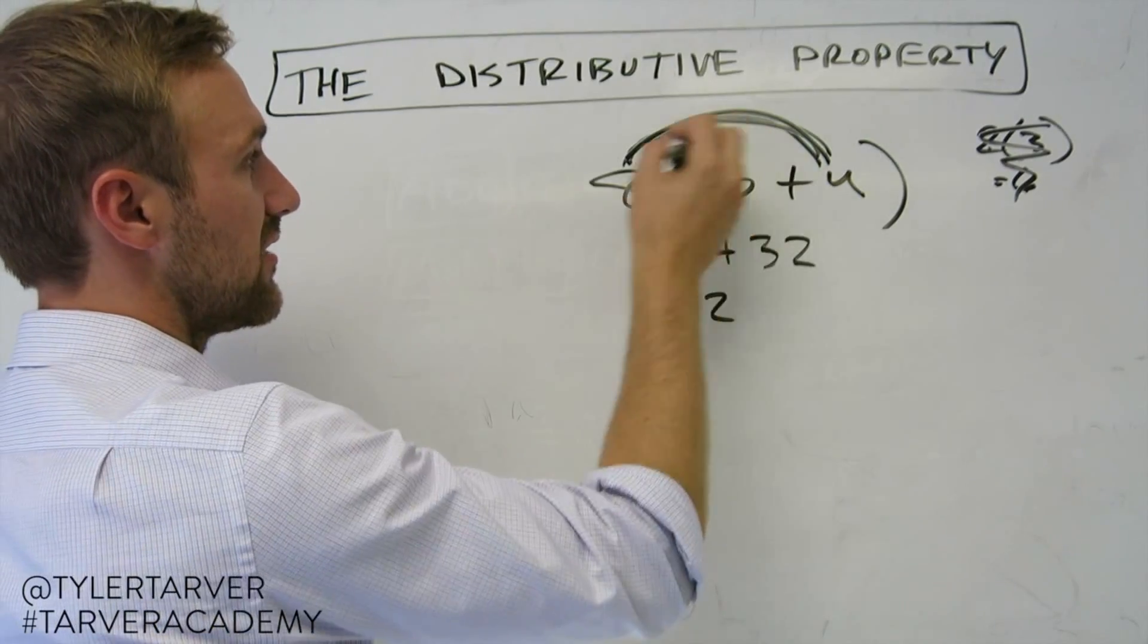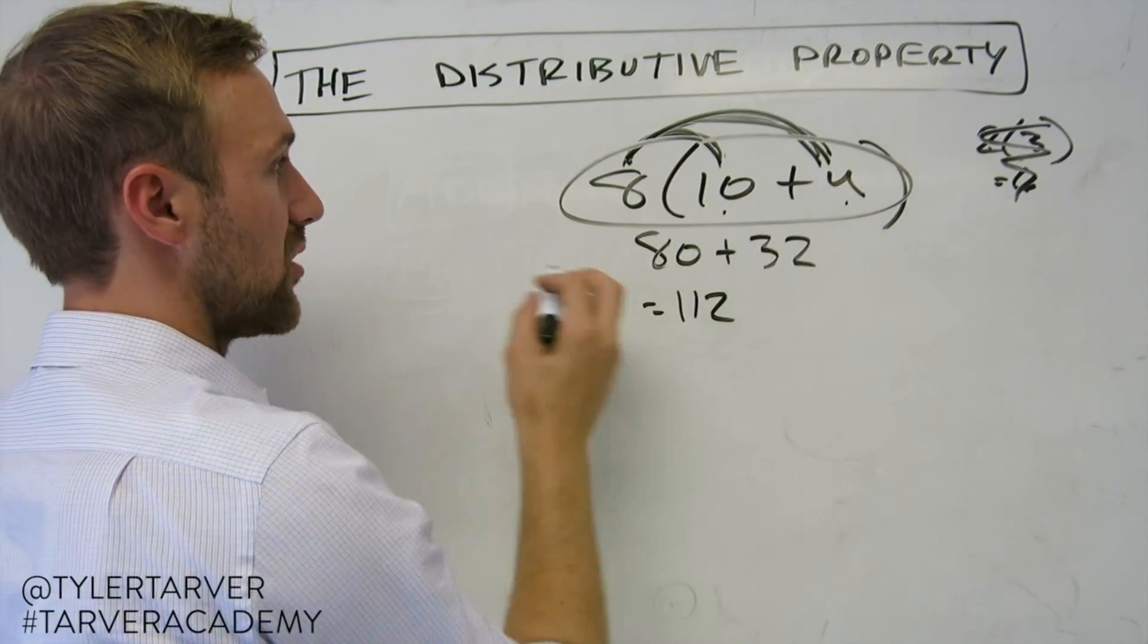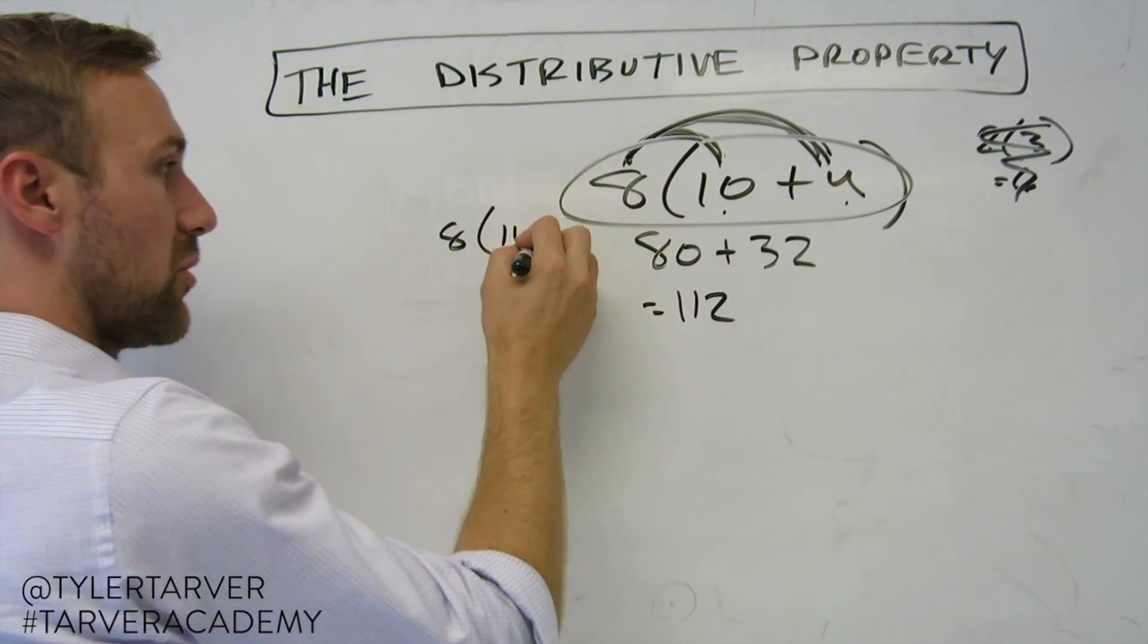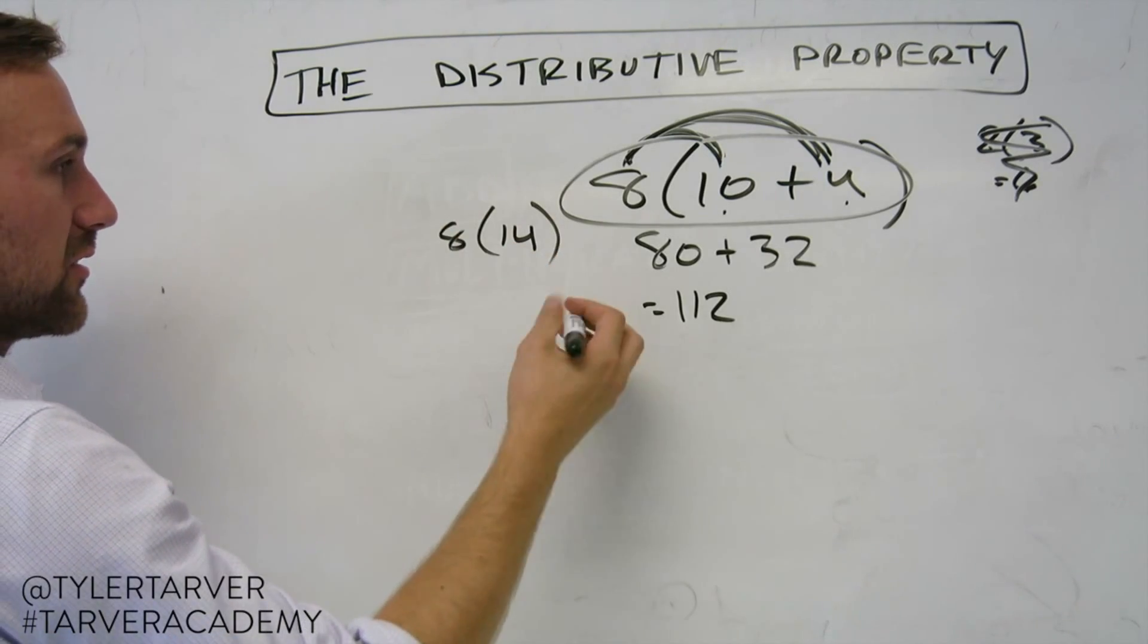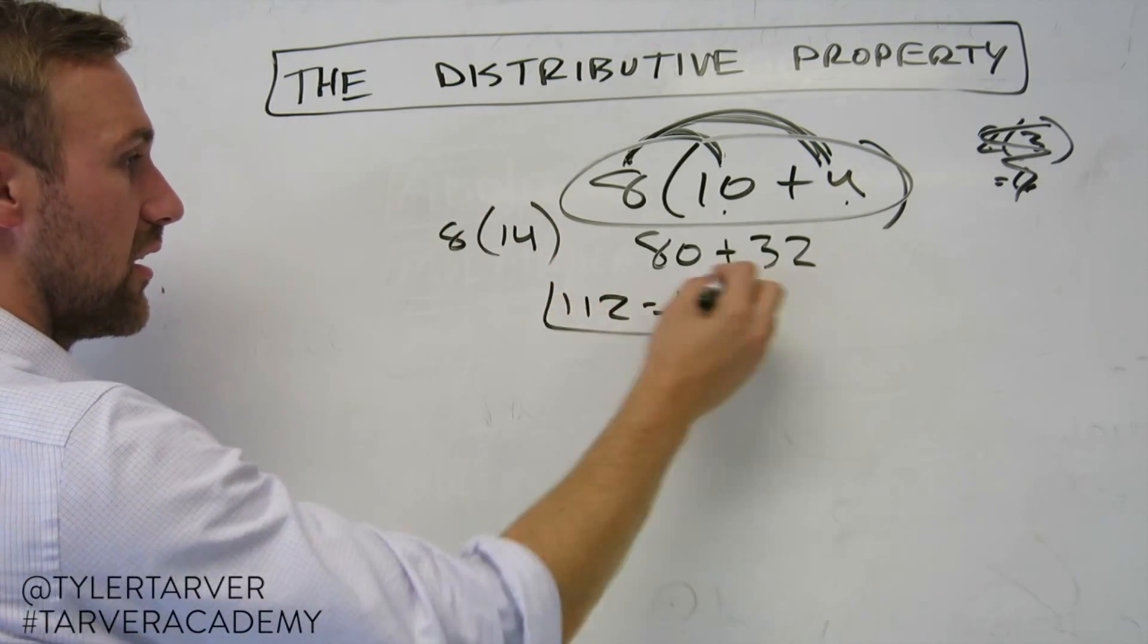I could also do it this way. Say I didn't distribute. I did 10 plus four is 14. So it's eight times 14. And eight times 14, that's 112. And you're done.